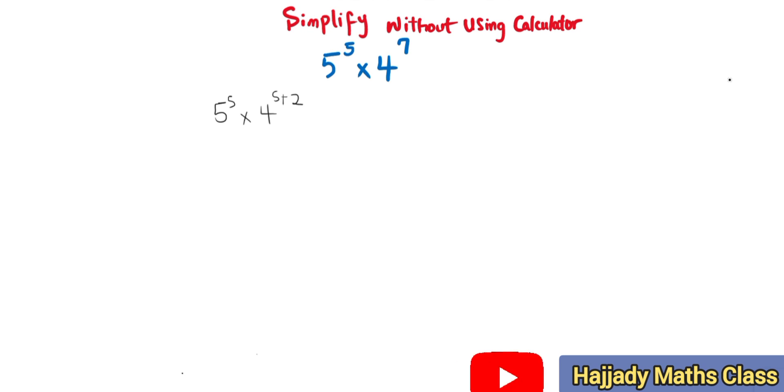Now this can be split as 5 raised to power 5 multiplied by 4 raised to power 5 times 4 raised to power 2. Don't forget the rule of indices that says a raised to power b plus c is the same as a raised to power b times a raised to power c.